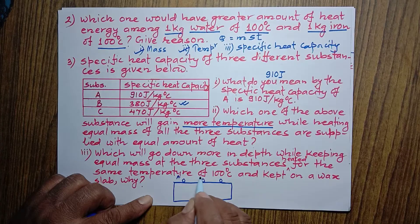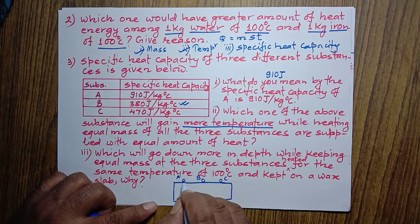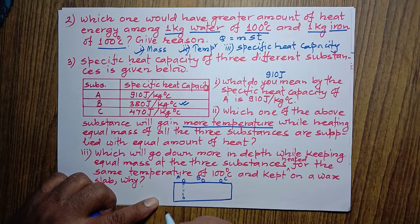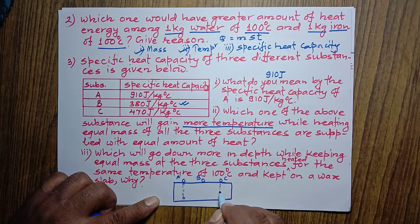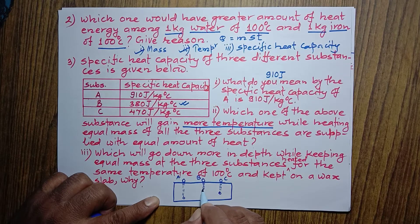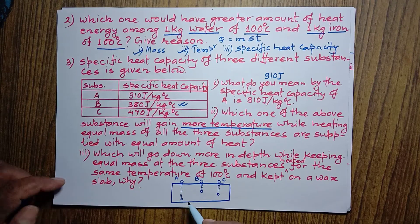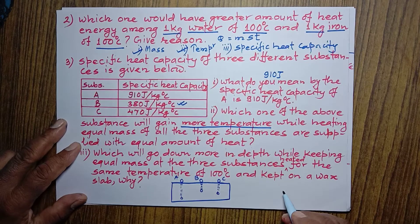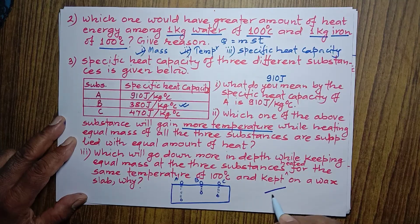So if A, B and C are placed on the wax slab, A will penetrate to the greatest depth because its specific heat capacity is the highest and it cools down slowly. C will go to slightly less depth than A, and B's specific heat capacity is the least, so it cools down quickly and cannot penetrate to much depth. That's why A goes to the greatest depth. All these questions are related to chapter 8.